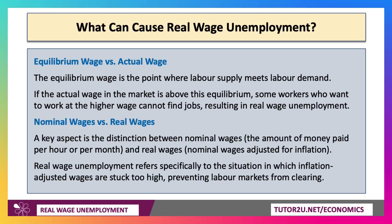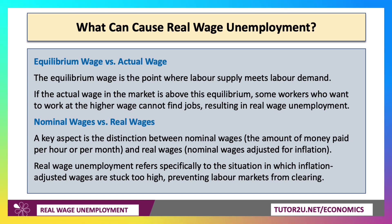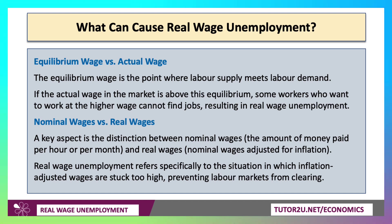The key distinction is between the money wage or the nominal wage — the amount of money paid per hour, per month, per week — and the real wage, which is the nominal money wage adjusted for inflation. Real wage unemployment refers specifically to a situation in which inflation-adjusted wages, the real wage, are perhaps stuck too high, preventing the labour market from clearing.